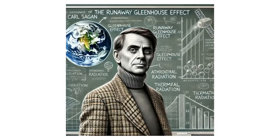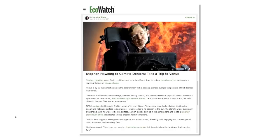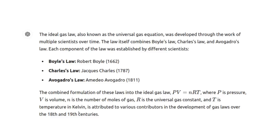For centuries people understood and abided by these laws. But then Carl Sagan came along with his runaway greenhouse effect theory about Venus, and Stephen Hawking extended this to say Earth is going to burn up. But the warmth on Venus is fully explained by the ideal gas law. Venus has a very thick atmosphere and thus the surface pressure on Venus is extremely high, due to the weight of the gases above it. The volume of Venus's atmosphere doesn't change and the number of molecules doesn't change either.